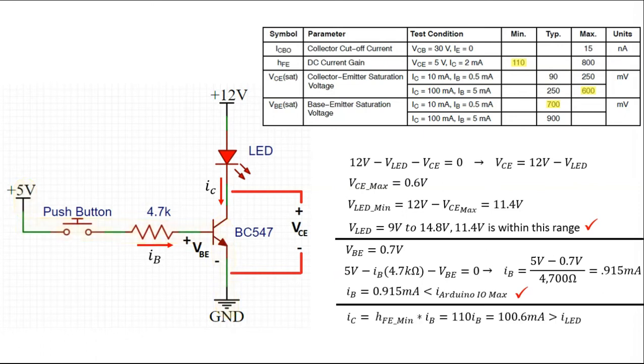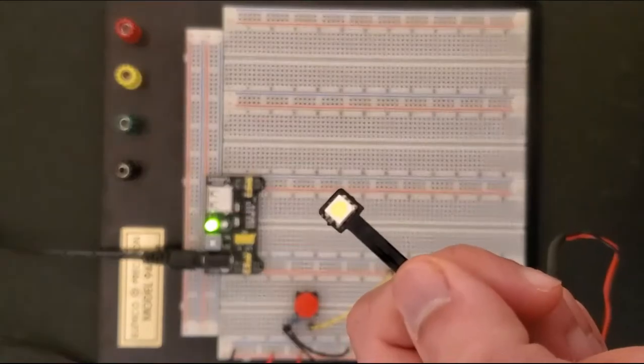Now we talked about the amplification factor, so we know that the current going through the collector equals the amplification factor times the current going through the base. That will be 110 times the 0.915 milliamps that we calculated, and that gives us 100.6 milliamps, which is greater than the current needed by the LED that we reviewed earlier as a minimum of 15 milliamps. So we're also good here. Now note that as I said earlier, that HFE, which is the current gain, is normally also referred to as beta in most typical electrical engineering introductory textbooks. Let's go ahead and do a quick test.